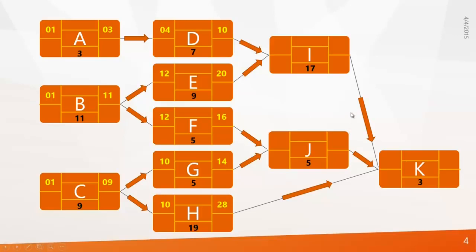At the third level, Activity I is waiting for two activities — D and E — to complete, with finish dates of 10 and 20. You pick the longest duration, which is 20, and add 1, making Day 21 the Early Start of Activity I. Always take the greater value and add 1. The same applies to Activity J.